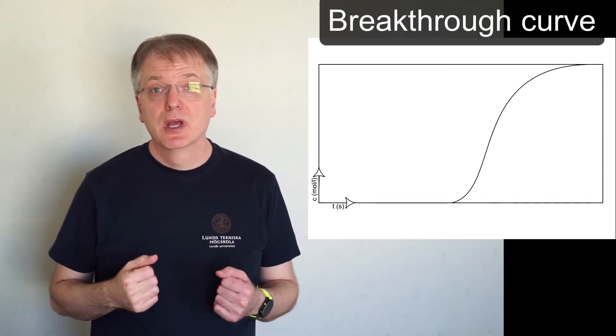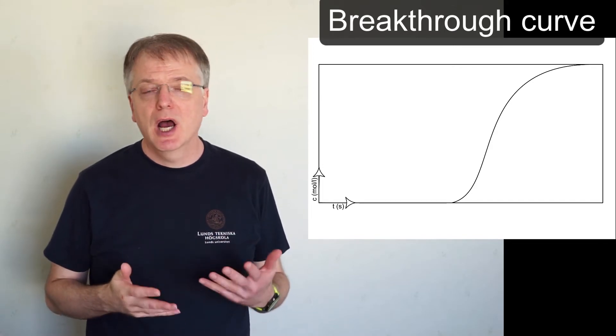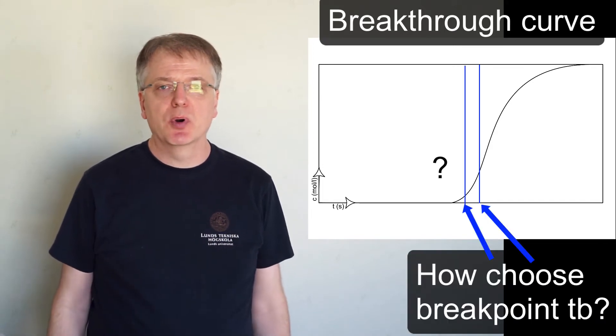In column batch adsorption, once we have our breakthrough curve for our adsorption column, how do we choose the breakpoint TB?